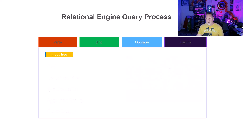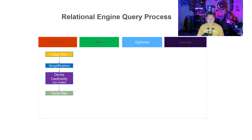We start optimization with input trees, then simplification, deriving cardinality and join orders, trivial plan, and then exploration.